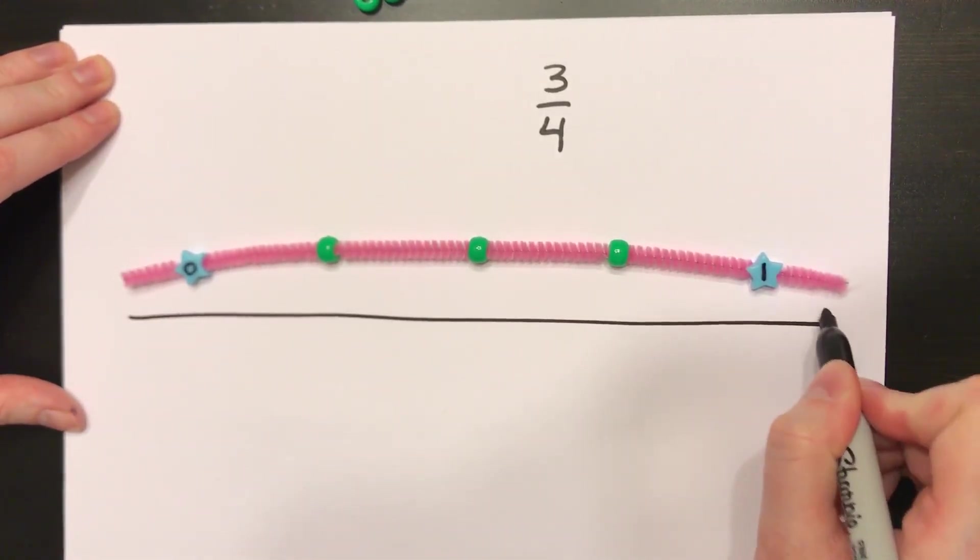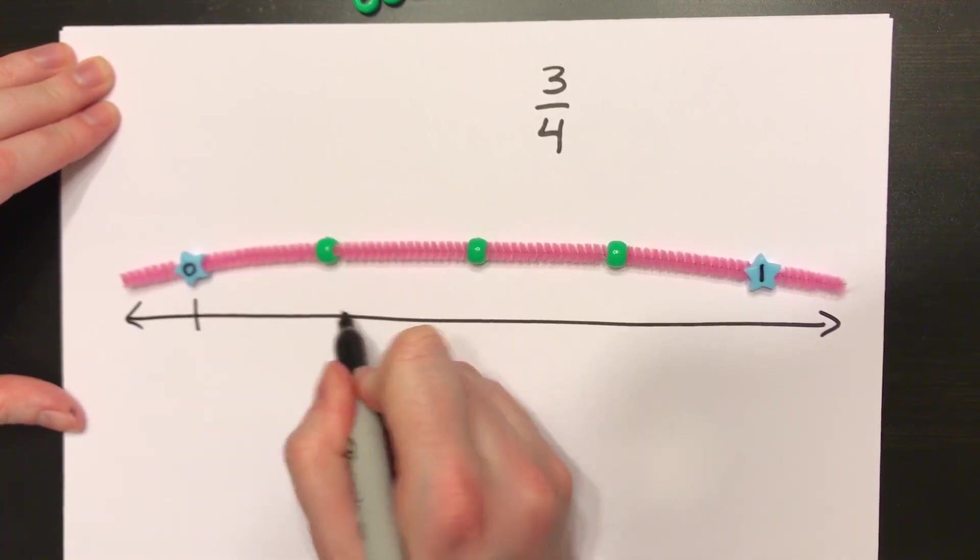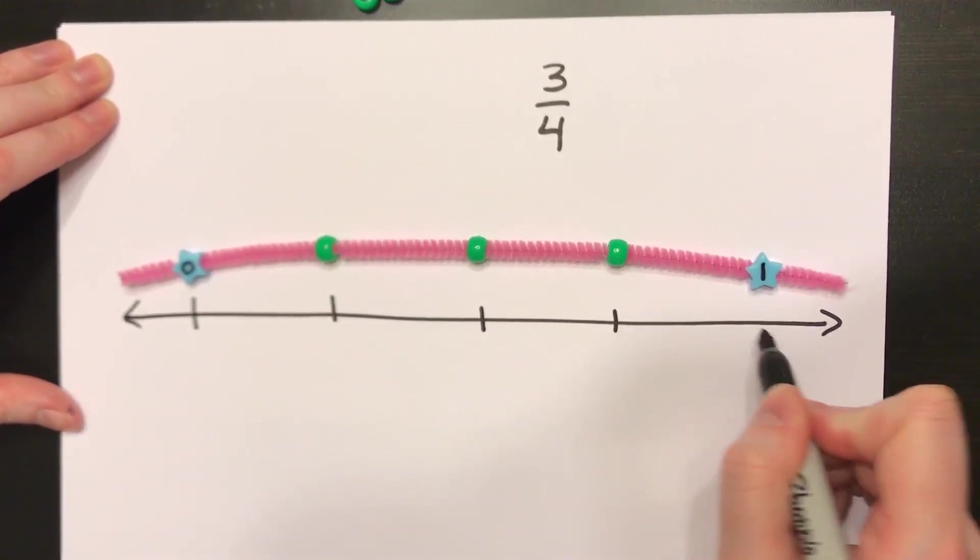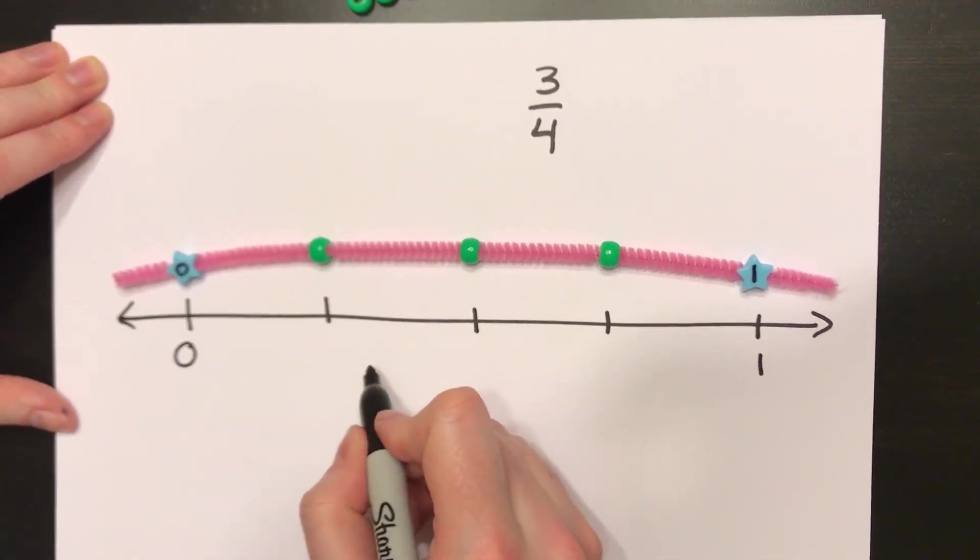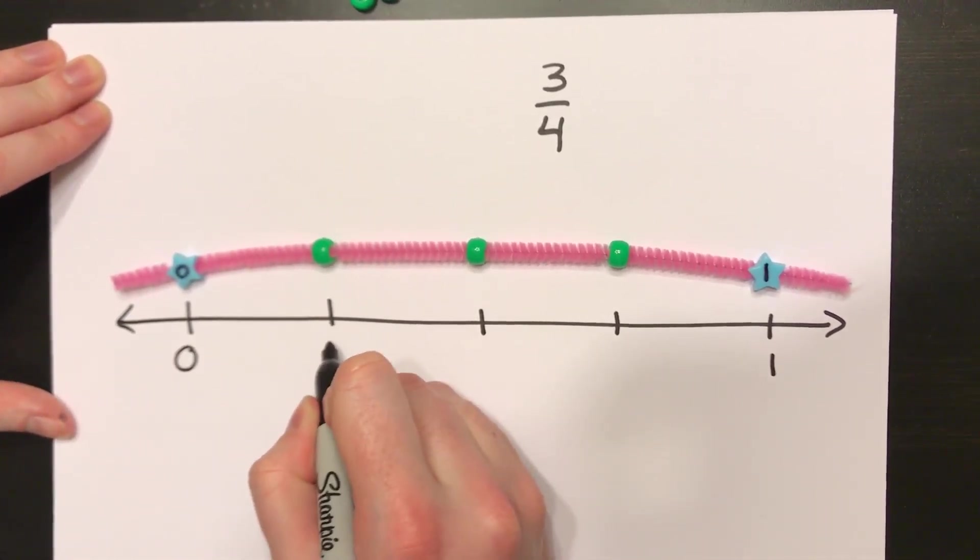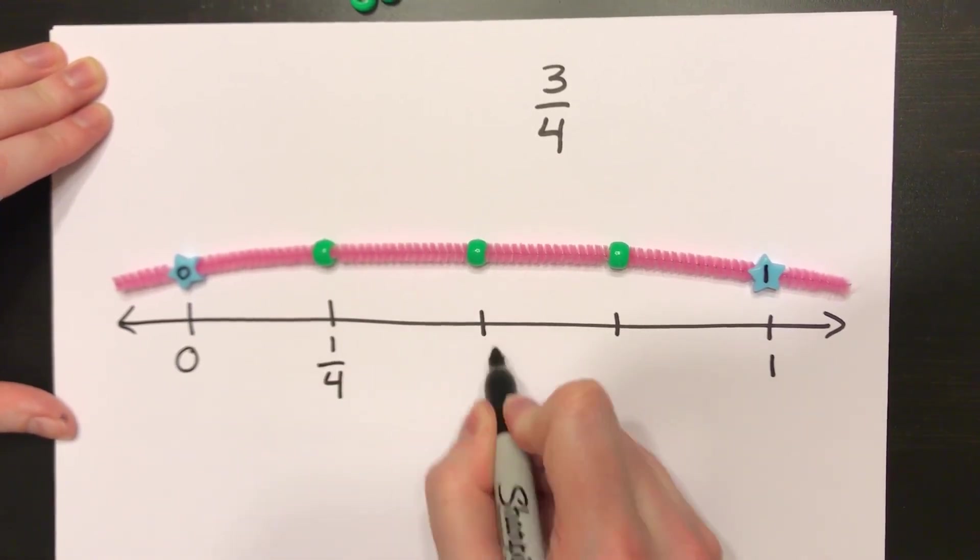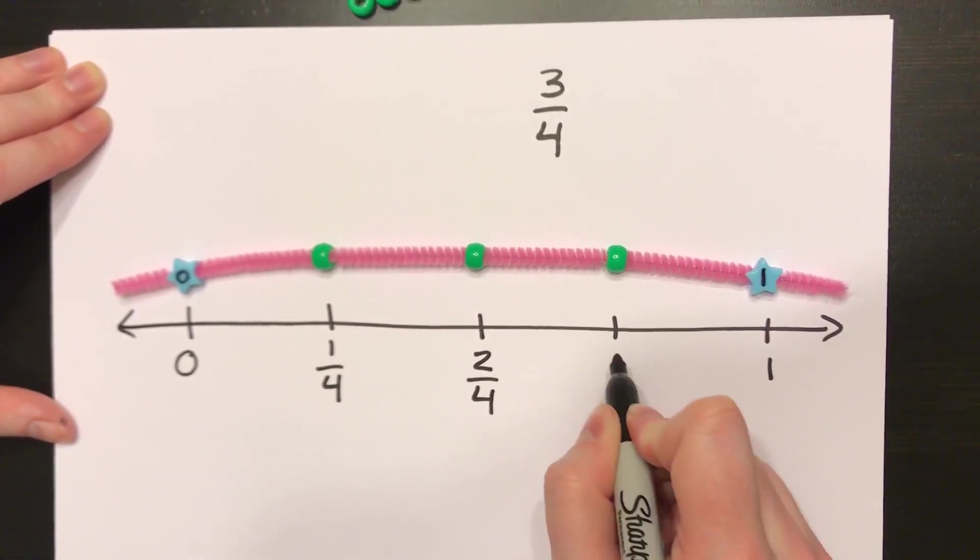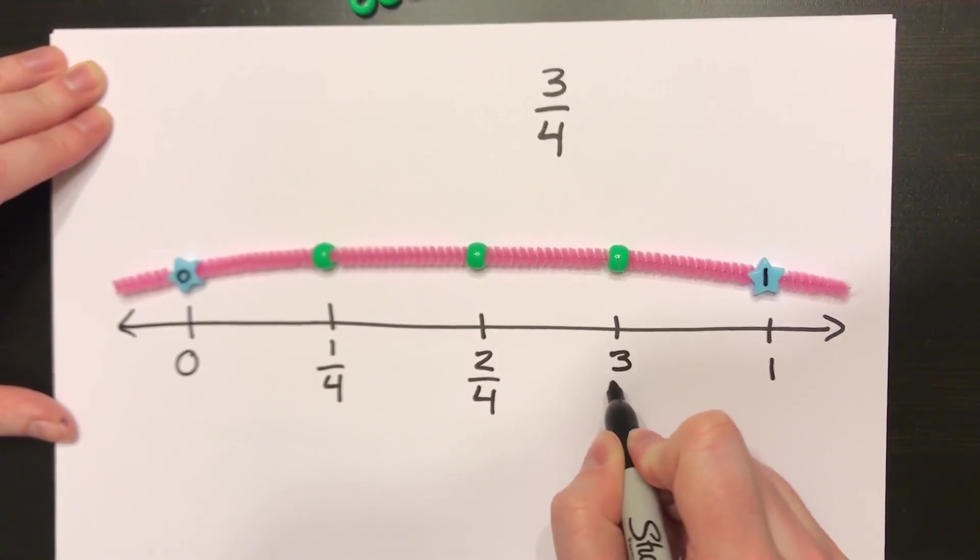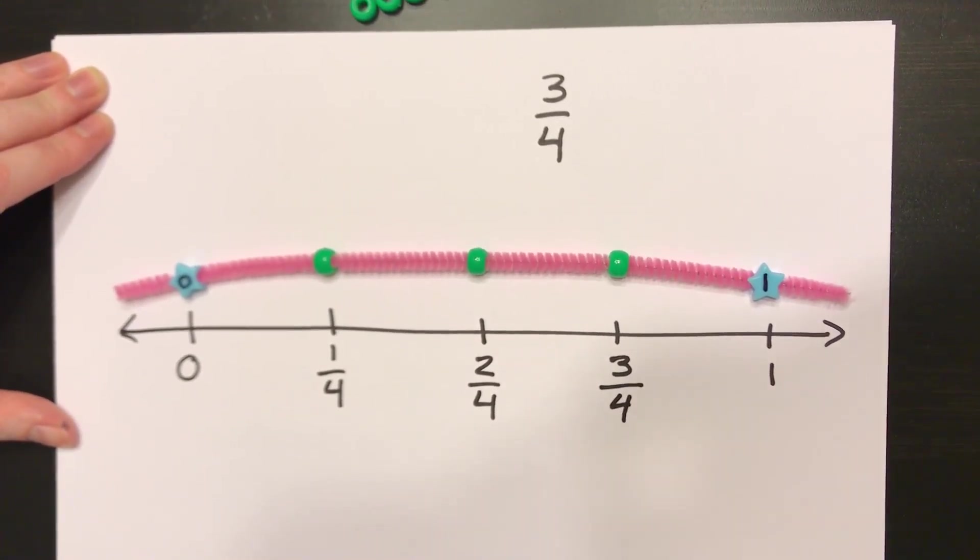Trace my number line. Put my tick marks at each bead. Label my wholes, 0 and 1. And if this is the first out of four parts, it would be 1 fourth. If this is the second out of four parts, it would be 2 fourths. If this is the third out of four parts, it would be 3 fourths.